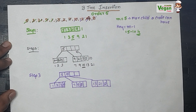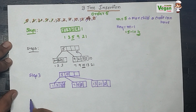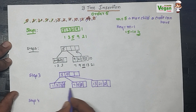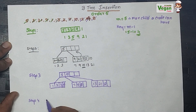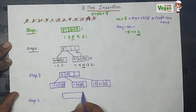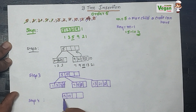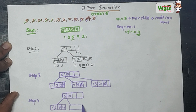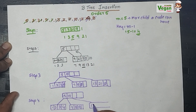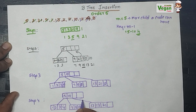In step 4, write all values in increasing order. The left node has 1, 2, 3, 4. The middle node has 7, 8, 9 with one key space remaining. The right node has 12, 13, 21 with one key space remaining. All elements given in the question have now been inserted.